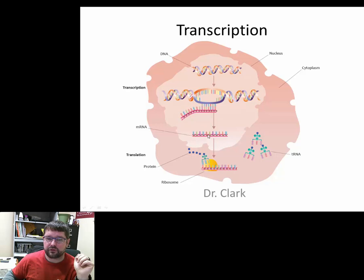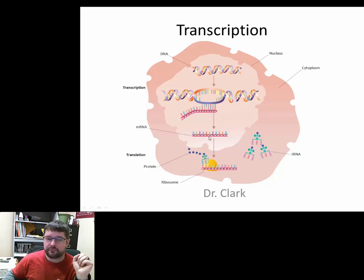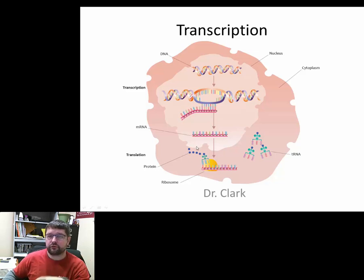We'll get to this material in a little bit. This process forms a messenger RNA strand. That messenger RNA strand then leaves the nucleus — you can see here in this light pink color is a nucleus — and the messenger RNA will leave the nucleus. What's going on here is called transcription.